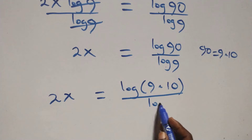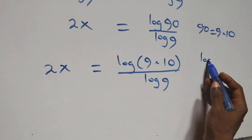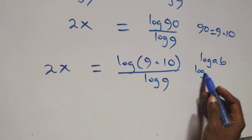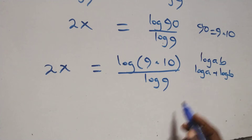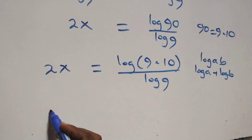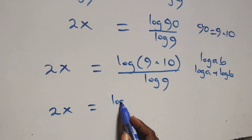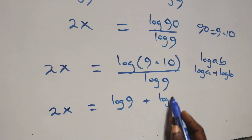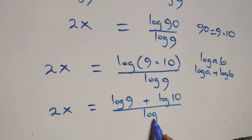Over log 9. Then what we have here follows: log of a times b can be written as log a plus log b. So we have 2x equals to log 9 plus log 10, all over log 9.